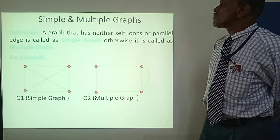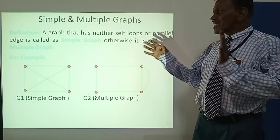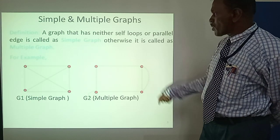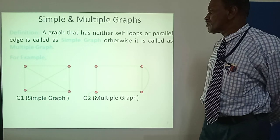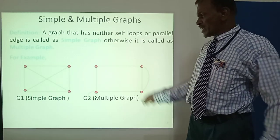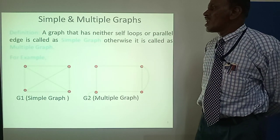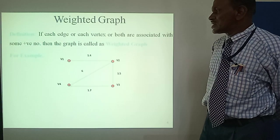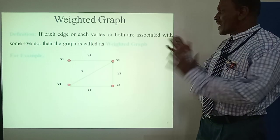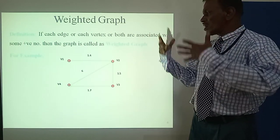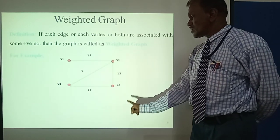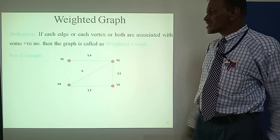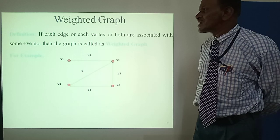Simple and Multiple Graphs. A graph that has neither self-loops nor parallel edges is called a simple graph. Otherwise it is called a multiple graph. In G1, the simple graph, each edge connects distinct vertices with no parallel edges. G2 is a multiple graph where edges can be repeated.